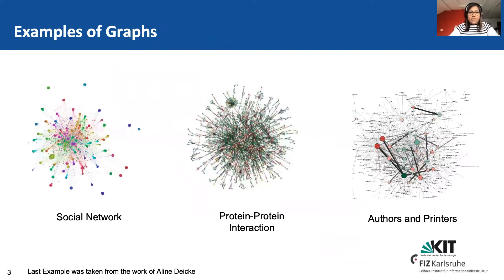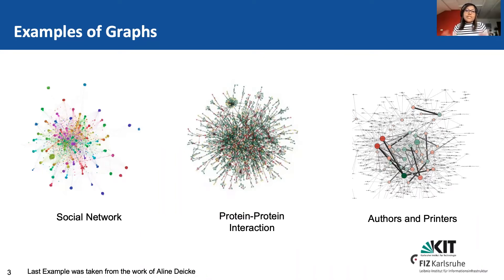To give you an overview of where graphs exist: in social networks, you have one person connected to another, or one person following another, which creates a graph. The nodes are the persons and the links represent following or friendship. You use this information to give recommendations about new friends using machine learning. Similarly, in protein-protein interactions, proteins are the nodes and interactions are the links. Another example, from Aline's slides, is about authors and printers.